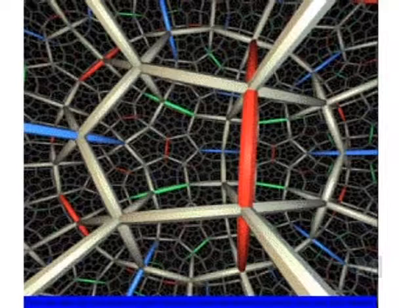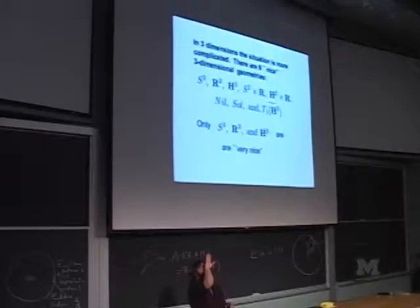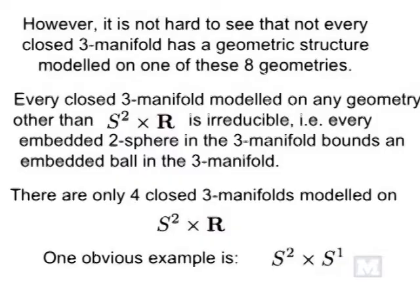It turns out there are eight three-dimensional geometries: the three-sphere, Euclidean three-space, hyperbolic three-space, and others including the two-sphere crossed with R. In S² × R, if you look in the spherical direction with really good vision, you can see your own back. If you look up in the real direction, you see forever. So it's quite different in different directions. There are some other funny ones too — there are eight of them.